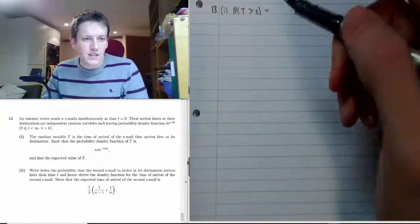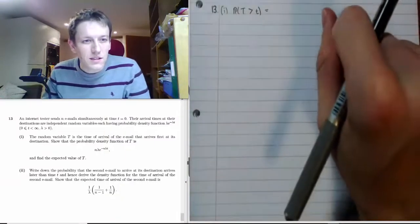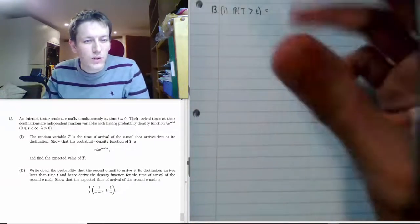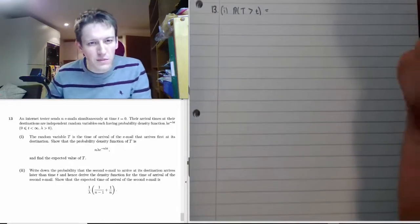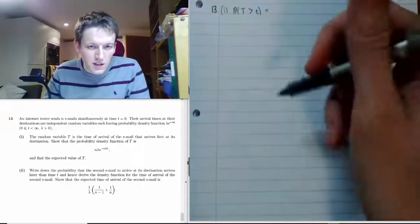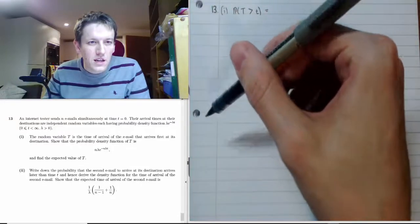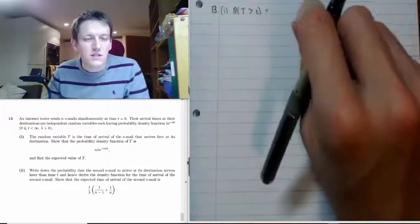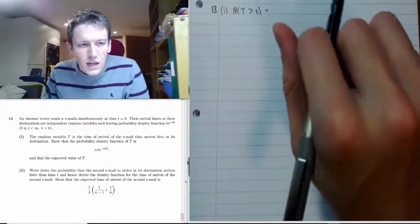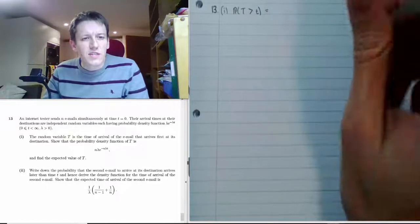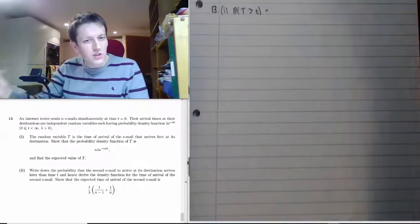The question describes an internet tester sending n emails at time zero. They're all going to take a different amount of time to arrive at their destination, and they'll be independent random variables with a PDF given by λe^(−λt), where t is positive because it's a time, and λ is some positive rate. The random variable T is the time of arrival of the email that arrives first, and we want to show what its PDF is.